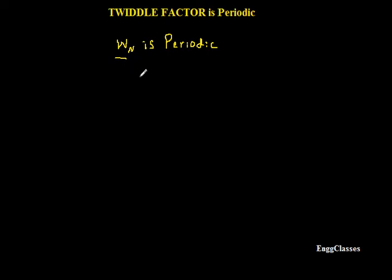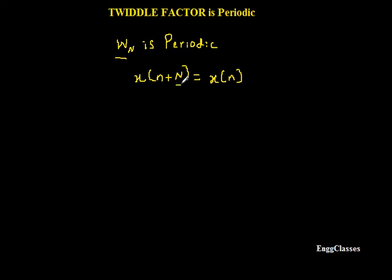From the concept of signals and systems, we know that any signal is called periodic if it satisfies the condition: x(n + N) = x(n), where N is the fundamental period. If this condition is satisfied, the given signal is periodic.